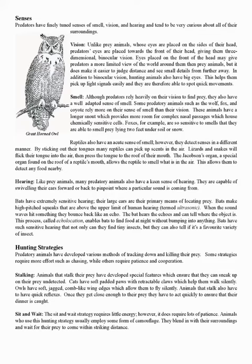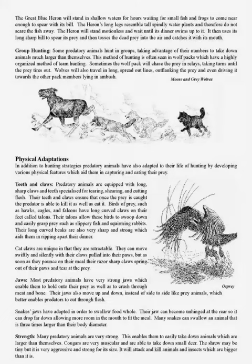The sit-and-wait strategy requires little energy but does require lots of patience. Animals using this strategy usually employ camouflage, blending in with their surroundings and waiting for prey to come within striking distance. The great blue heron will stand in shallow waters for hours waiting for small fish and frogs to come near enough to spear with its bill. The heron's long legs resemble tall, spindly water plants and do not scare the fish away. It stands motionless until its dinner swims up, then uses its long sharp bill to spear the prey, tossing it into the air and catching it with its mouth.